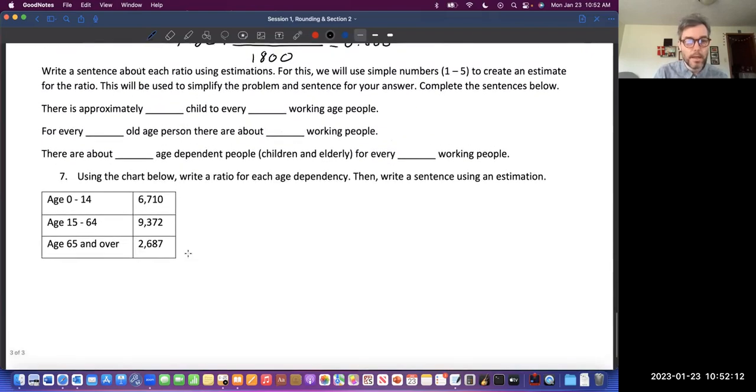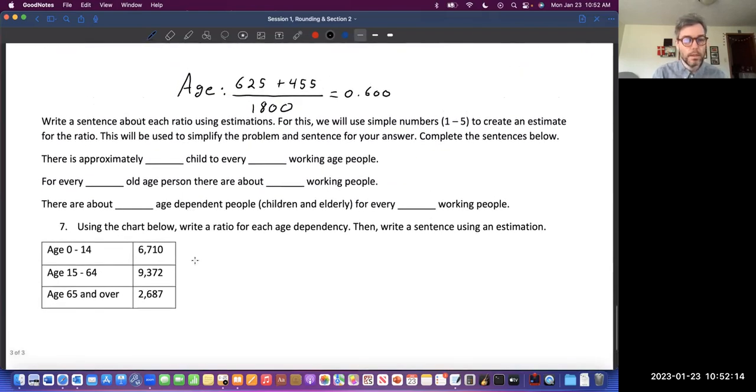Let's see, I have eight minutes. If it's okay with you, I'm just going to skip right to this because I'm almost out of time. We're going to do the child dependency ratio.